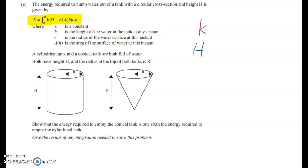And then in the formula in here we can see that we've got the height of the water at any point in time. That's my variable. And then A(h) is the area of the surface of water at this instant.